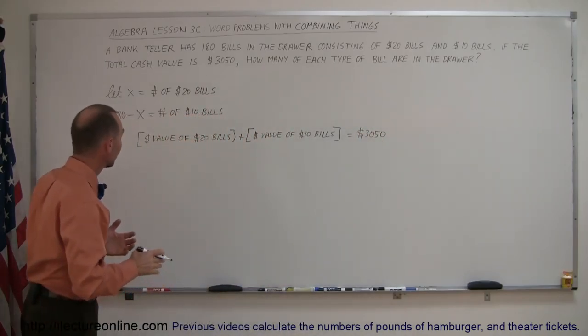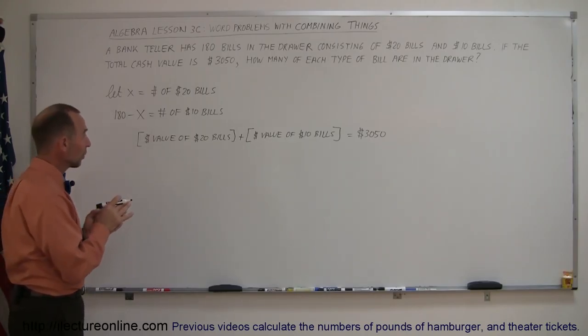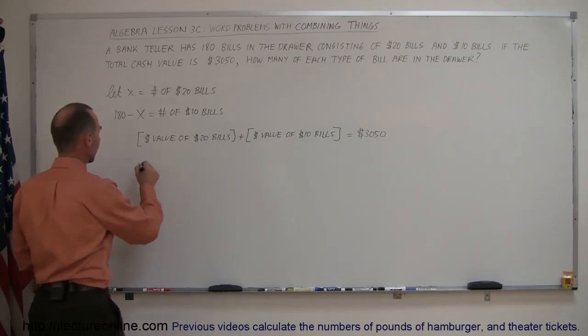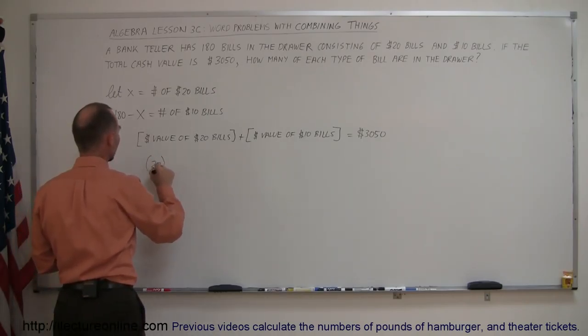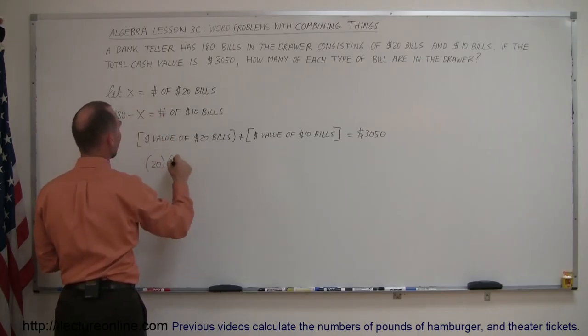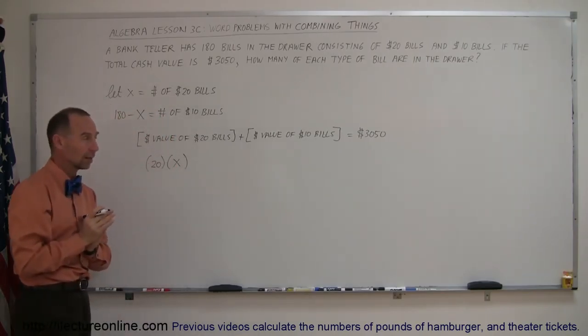So how do we find the value of the $20 bills? Well, we take the value of each bill and we multiply it times the total number of bills. So that means that $20, which is the value for each bill, times the number of bills, and we have x of them, so x times 20 will give you the total value of the $20 bills.